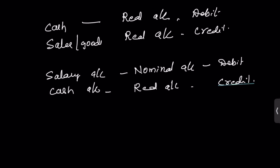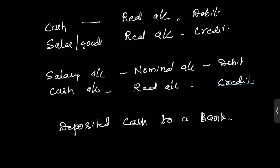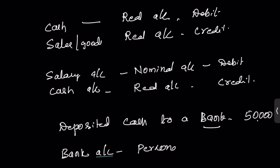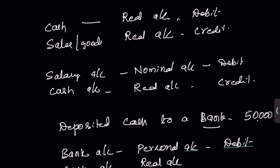For a personal account example: cash deposited to your bank, say rupees 50,000. Bank account is a personal account and cash account is a real account. The rule for personal account says debit the receiver, credit the giver — bank is receiving the cash, so bank account is debited. Real account says credit what goes out — when you pay cash to the bank, cash is going out — so cash account is credited.